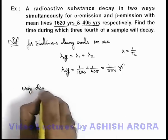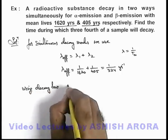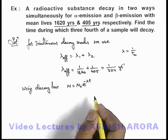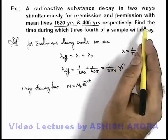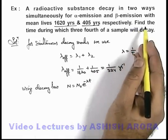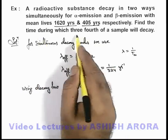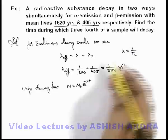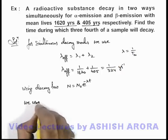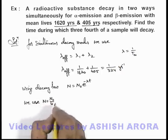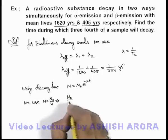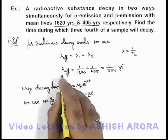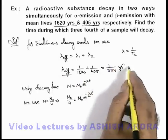Using the decay law, we can write N equals N₀ times e to the power minus lambda t. We are given that 3/4 of the sample will decay, which means 1/4 of the sample will be left over. So we substitute N = (1/4)N₀ and use lambda effective equal to 1/324 per year.